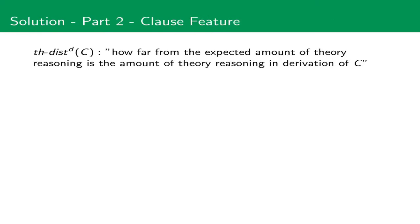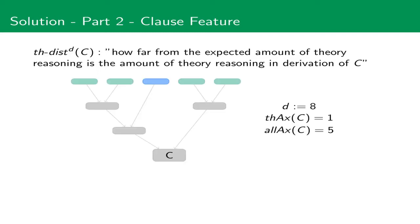As second part, we introduce the theory distance for each clause c. Intuitively, it denotes how far from the expected amount of theory reasoning is the amount of theory reasoning in the derivation of c. So, let's look at an example. Consider the following derivation of the clause c. We expect for each theory axiom 8 overall axioms. But in this derivation, we have one theory axiom but only 5 overall axioms, which means that we would need three additional overall axioms to get to the expected amount of theory reasoning. Therefore, the theory distance with respect to d value 8 of this clause is 3. I also want to mention that it's very easy to compute this theory distance with a simple formula denoted below.